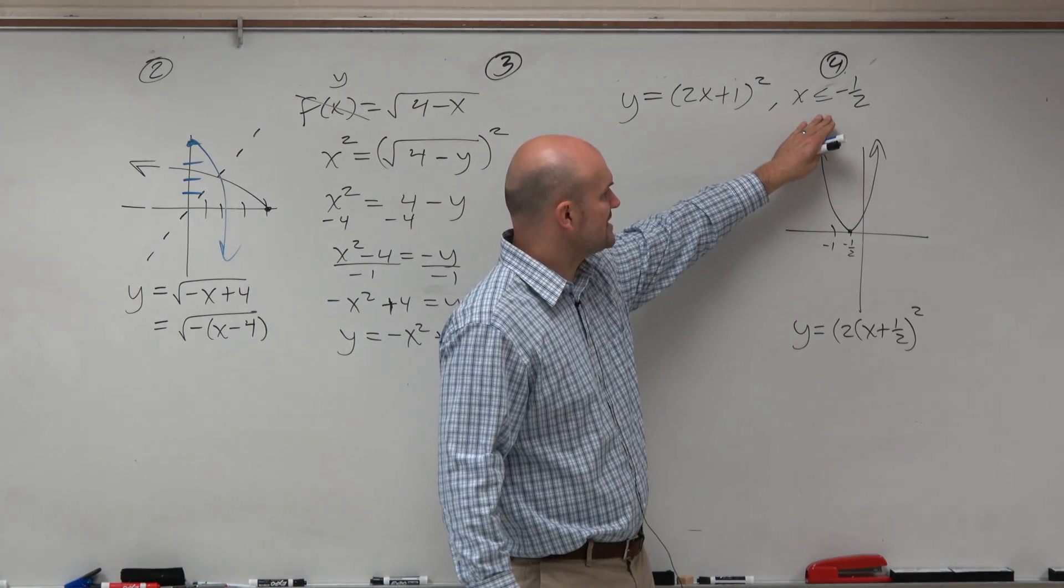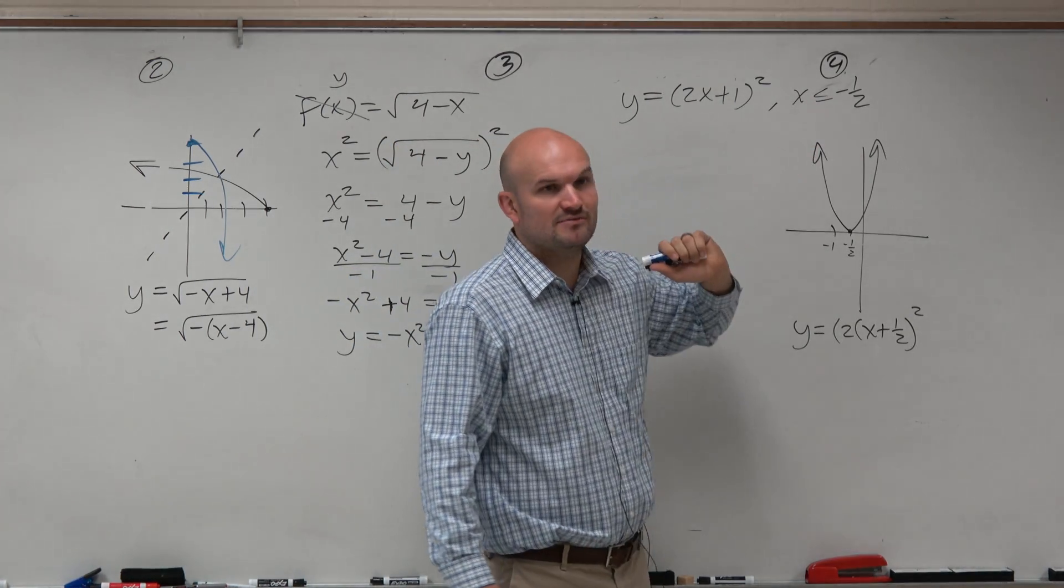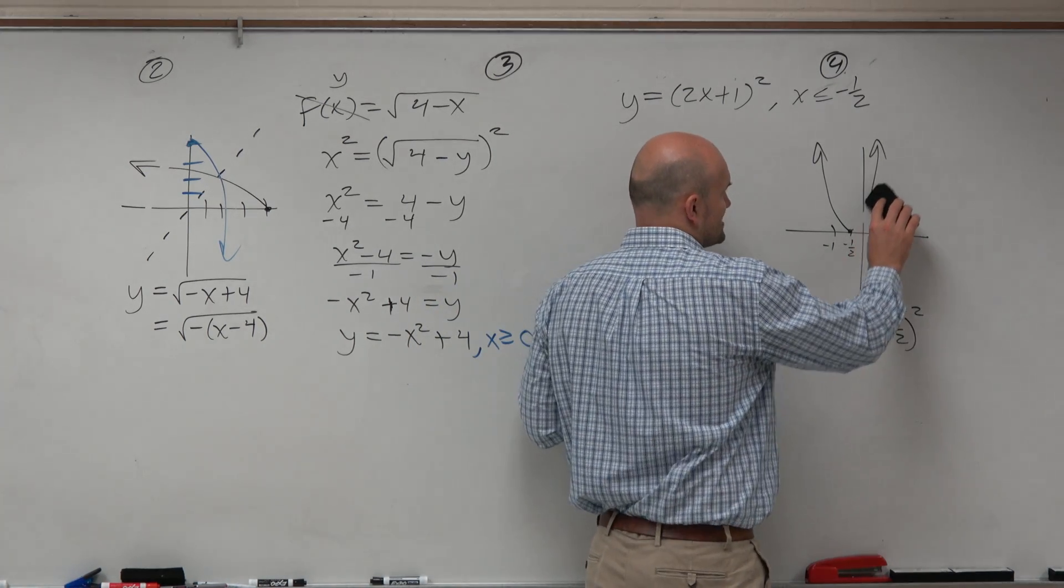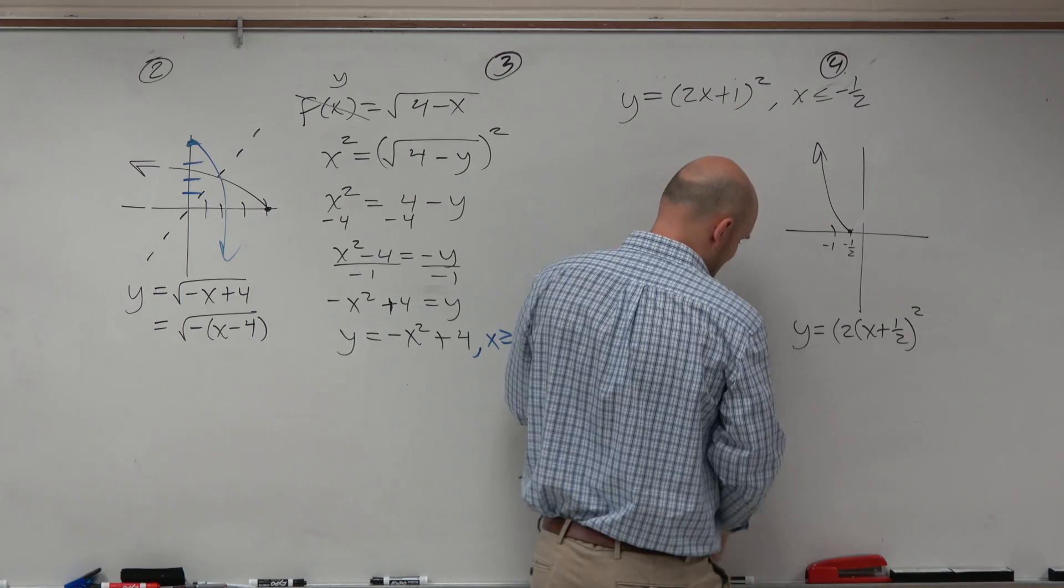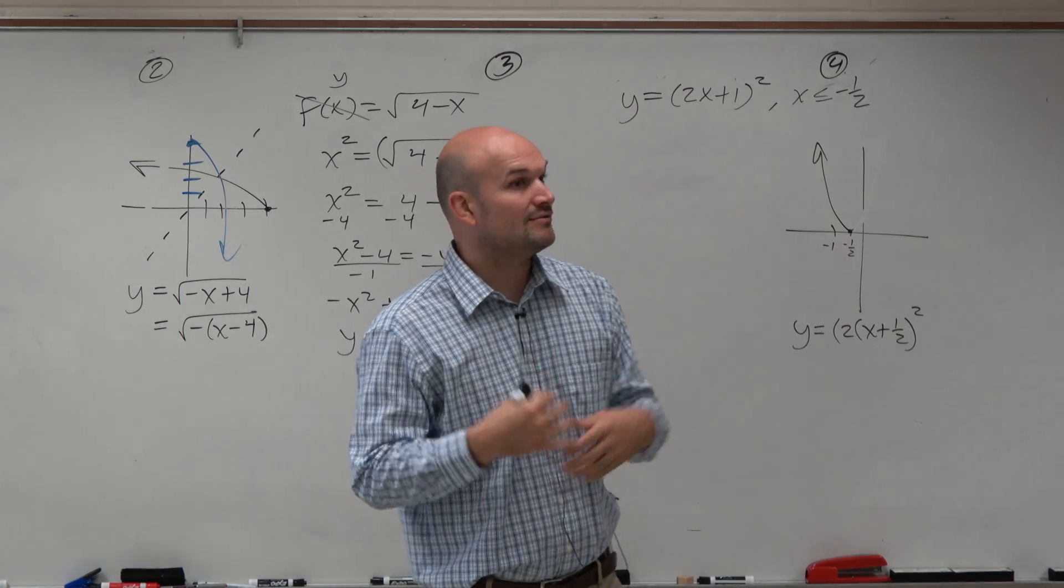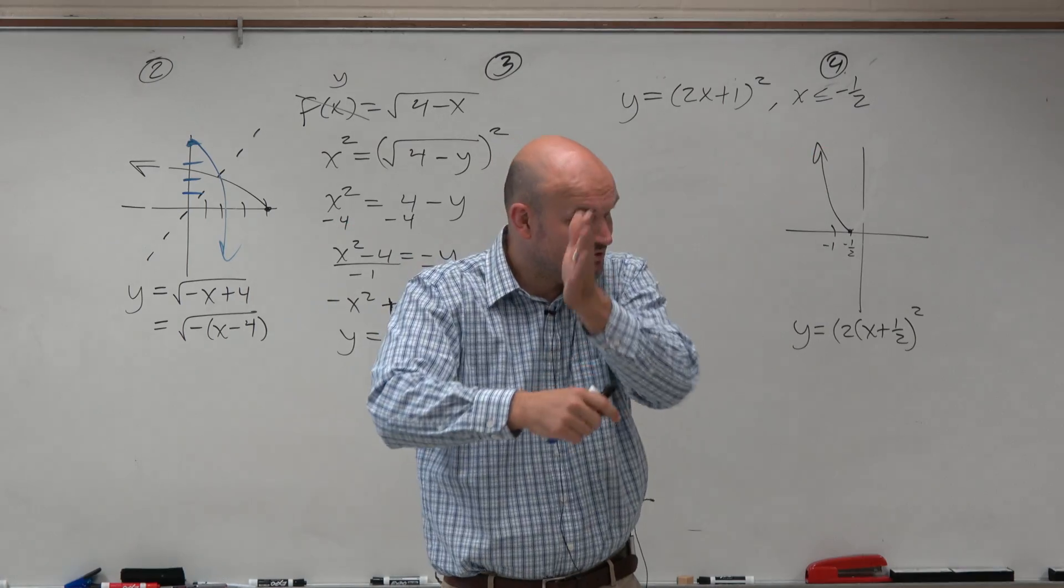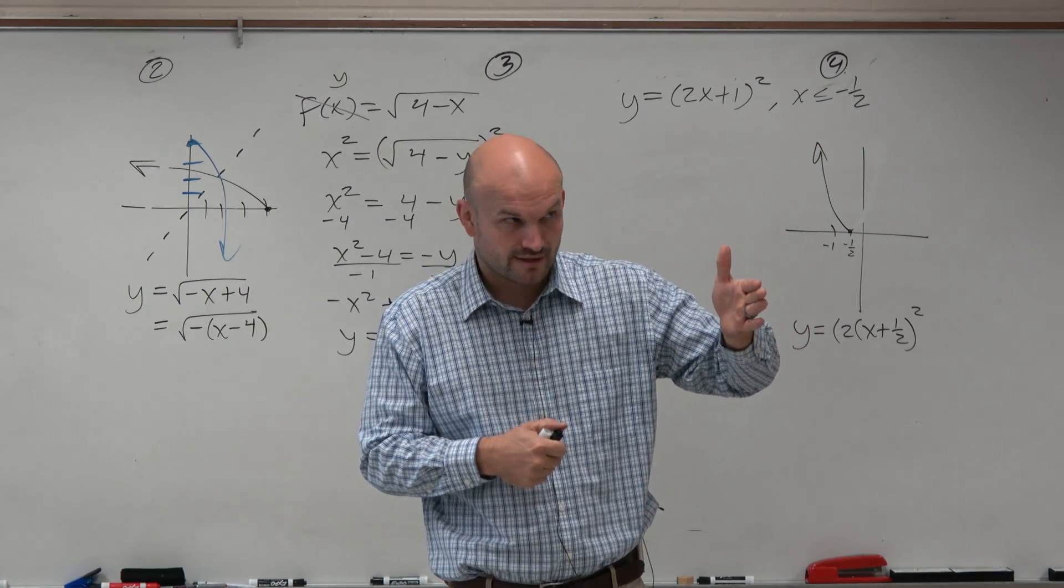However, when we look at this restriction, we say, oh, that's reflected about the negative 1½, right? So x has to be less than or equal to negative 1½. So actually, that function looks like that, right? Like piecewise functions, remember, we did this for piecewise functions. We would graph it, and then we re-graphed it based on the domain restrictions.